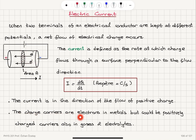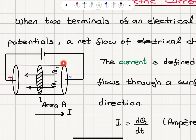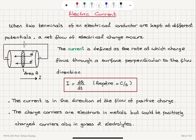The charge carriers are electrons in metals. But in gases or electrolytes, there could be positively charged carriers as well — you may have mobile ions in those cases. When we talk about a solid electrical conductor, a metal, it is the electrons that are carrying the charge.